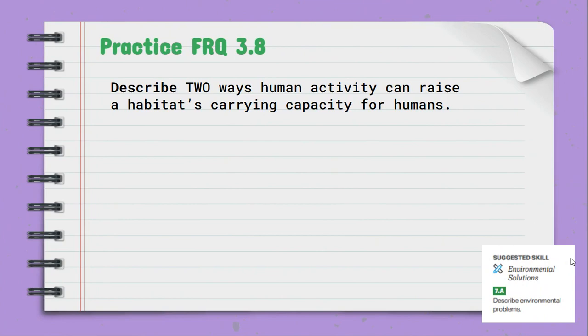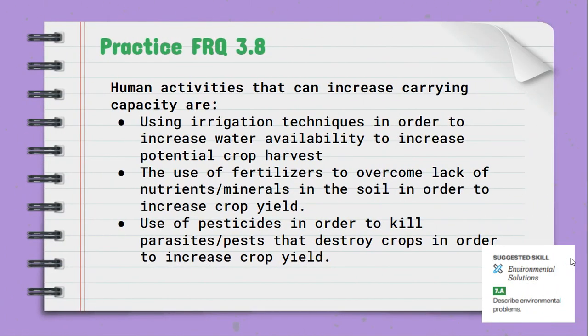Take a moment and answer the Practice FRQ journal in your notes and then on the Ed Puzzle. For our Practice FRQ 3.8, you had to describe two ways human activity could raise a habitat's carrying capacity for humans specifically. Accepted answers include: the use of irrigation techniques to increase water availability to crops; the use of fertilizers to overcome the lack of nutrients or minerals in soil to increase crop yields; and the use of pesticides to kill harmful pests that might eat our crops.